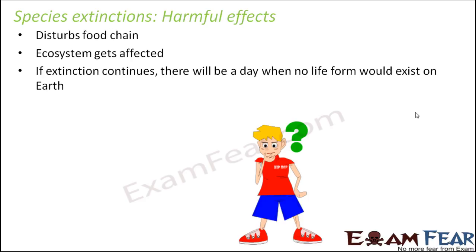If extinction continues, there will be a day when no life form would exist on Earth. Earth is unique because of the existence of various life forms. Today maybe one species becomes extinct, tomorrow two more, and day after tomorrow five more — gradually more species becoming extinct will leave the Earth with fewer life forms. There might be a day when no life form exists on Earth, and the planet would no longer be unique. That is why it is high time we take special care to prevent species extinction.